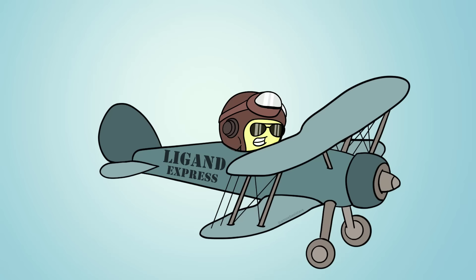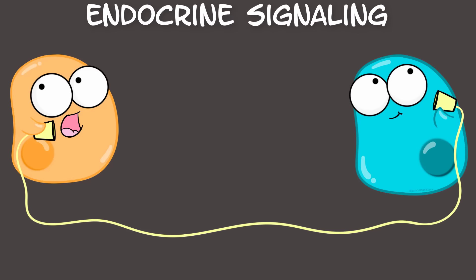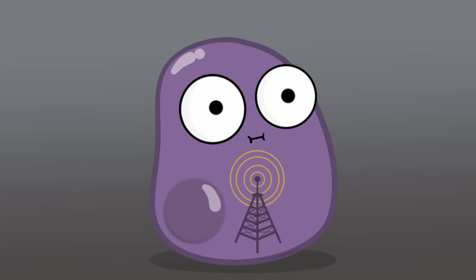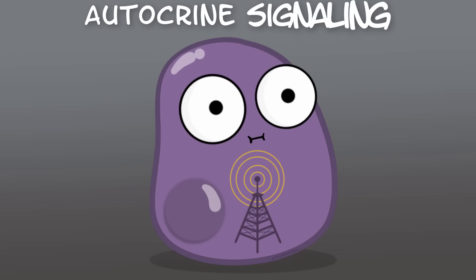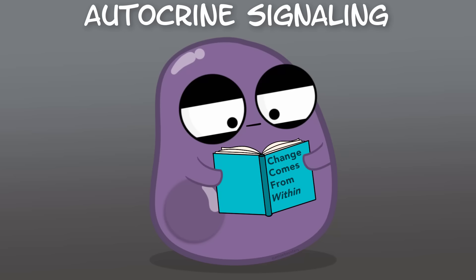What about long distance? Endocrine signaling can allow a cell to communicate with a target cell from far away — signals may be carried in the bloodstream. Hormones released by certain types of endocrine cells are a great example. A cell could also just signal itself. In autocrine signaling, a cell secretes a certain type of molecule which then binds to its own receptor and causes a response. A cell releasing its own growth factor could be an example of this.